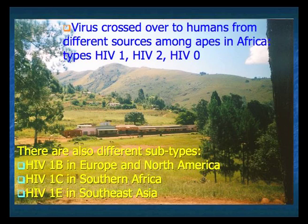HIV-1 is predominant around the world and has different subtypes. HIV-1b is the type known in Europe and North America, HIV-1c is the one predominant in southern Africa, and HIV-1e is a variant now found in Asia, particularly around Thailand.